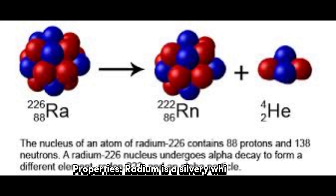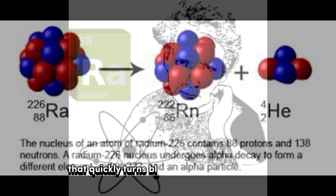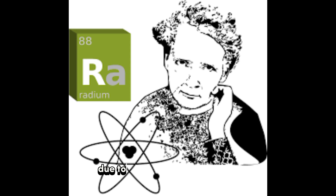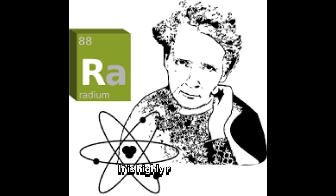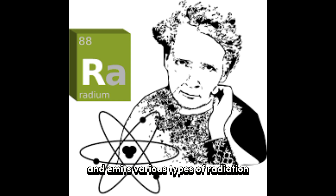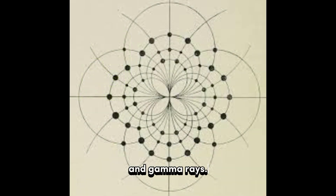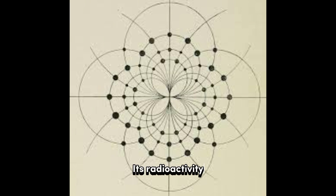Radium is a silvery-white metal that quickly turns black upon exposure to air due to its reaction with oxygen. It is highly radioactive and emits various types of radiation, including alpha particles, beta particles, and gamma rays.